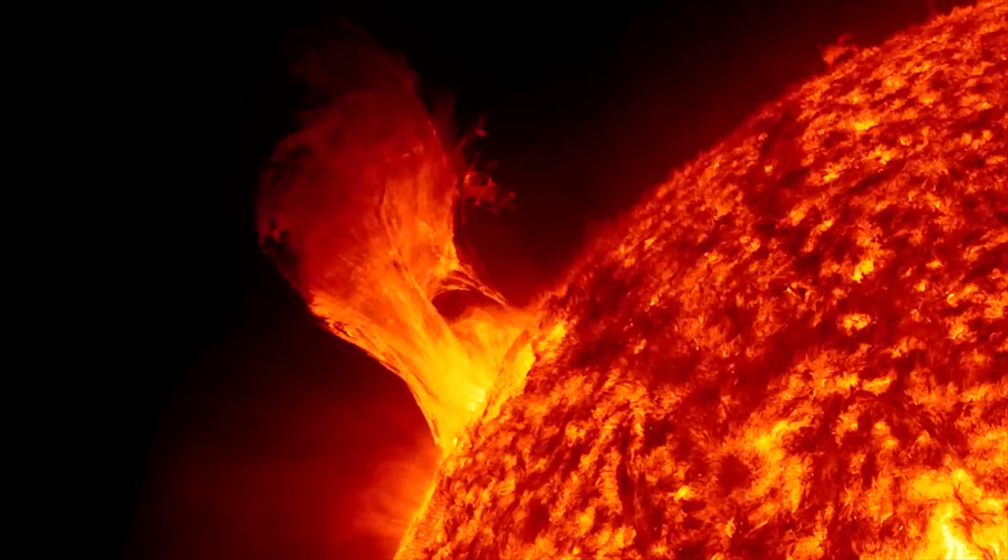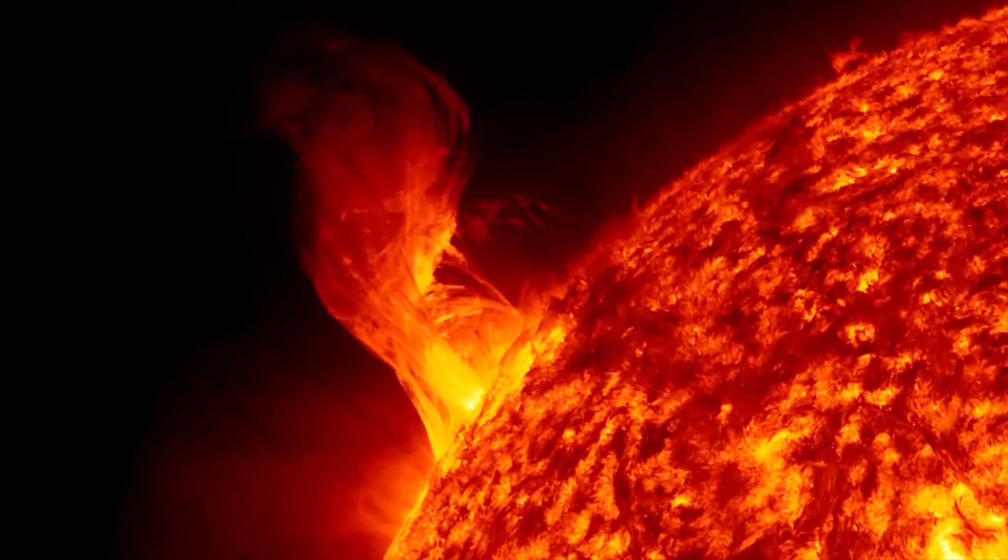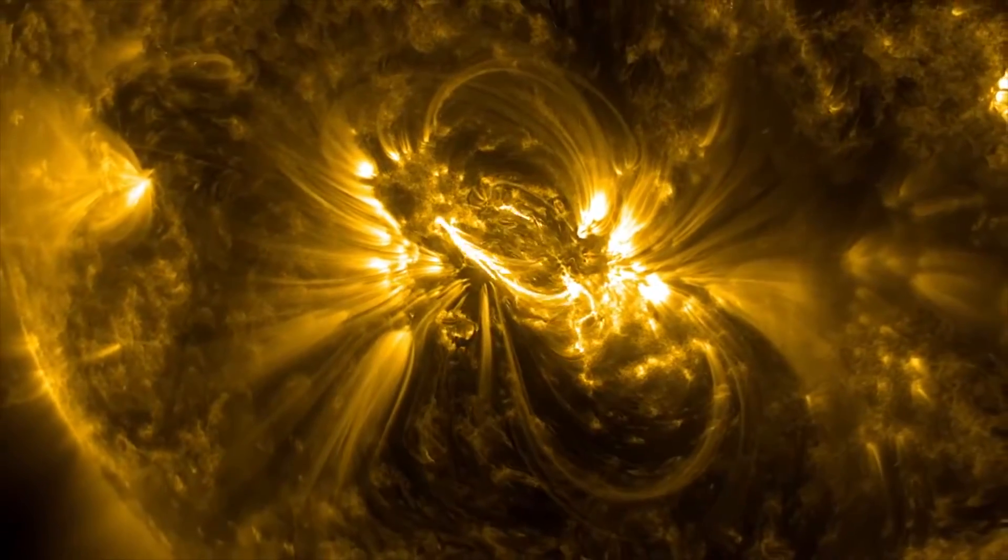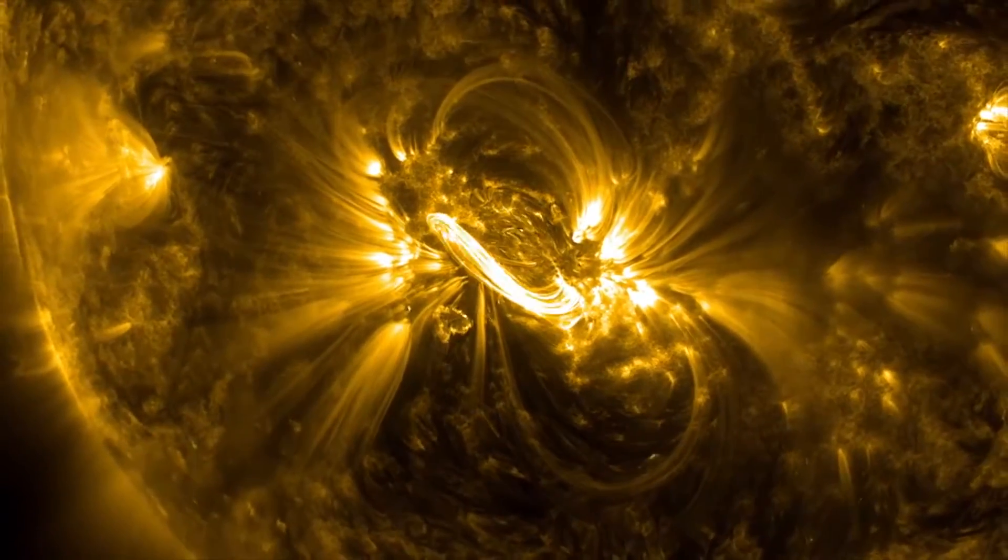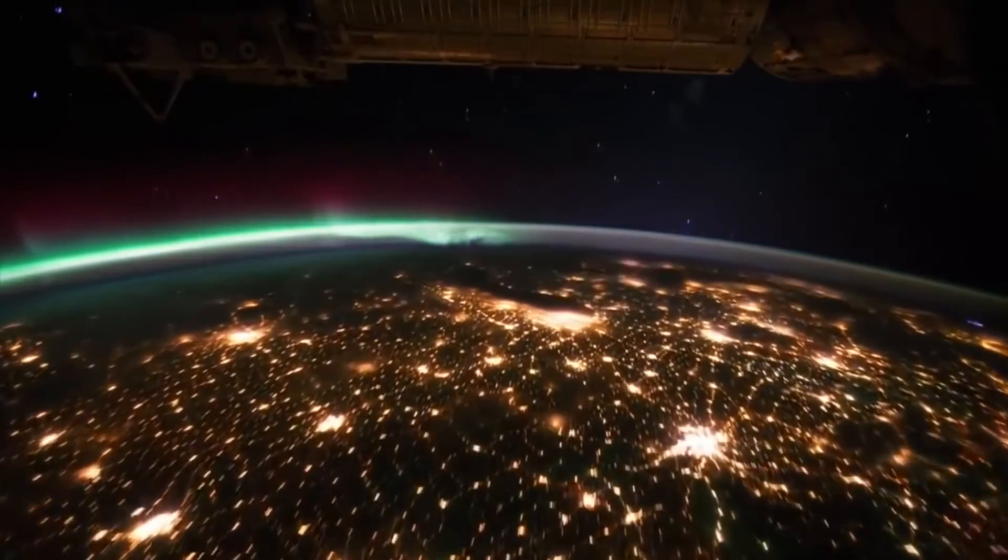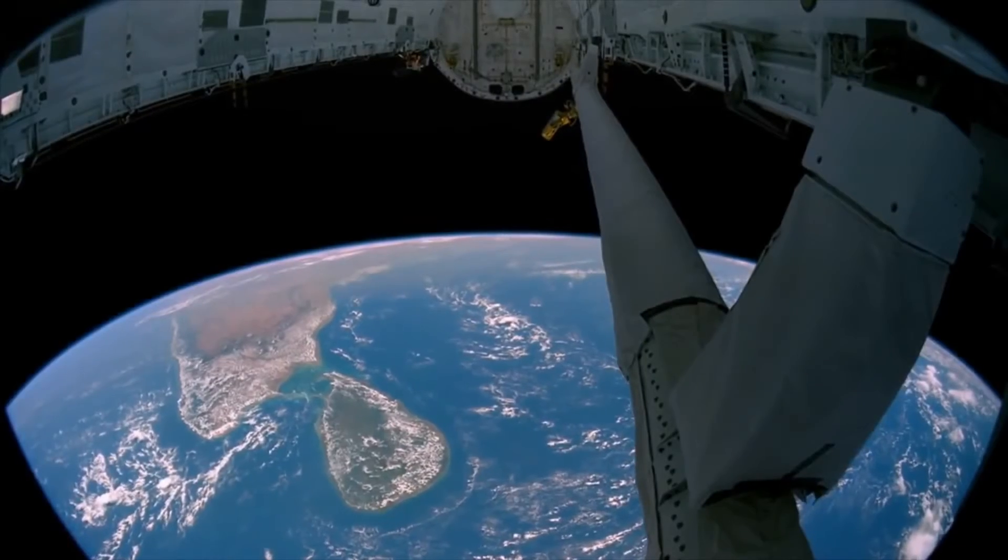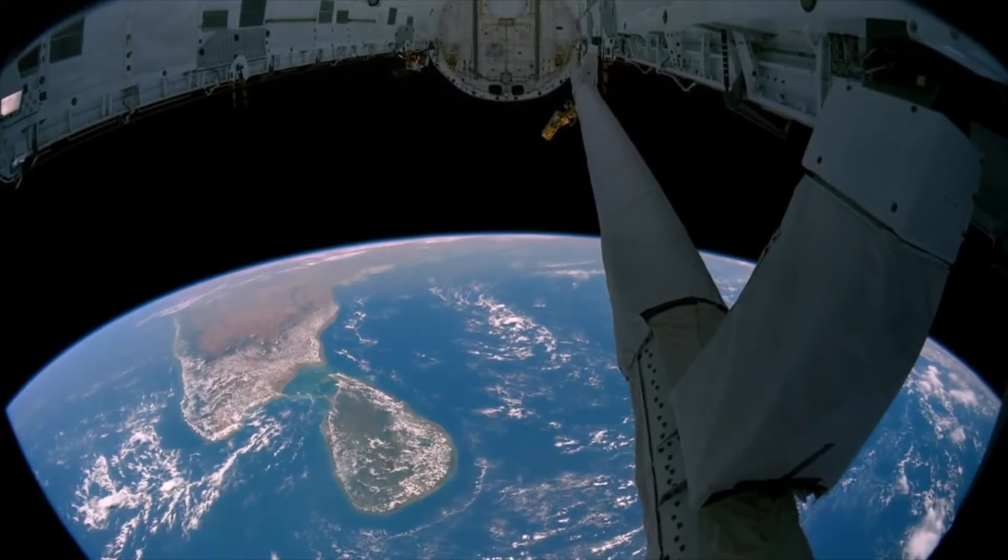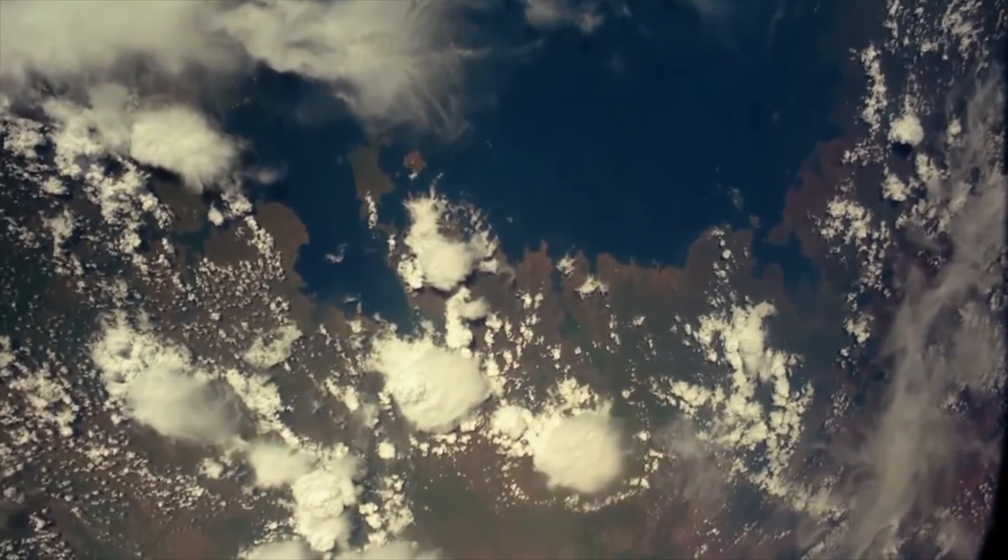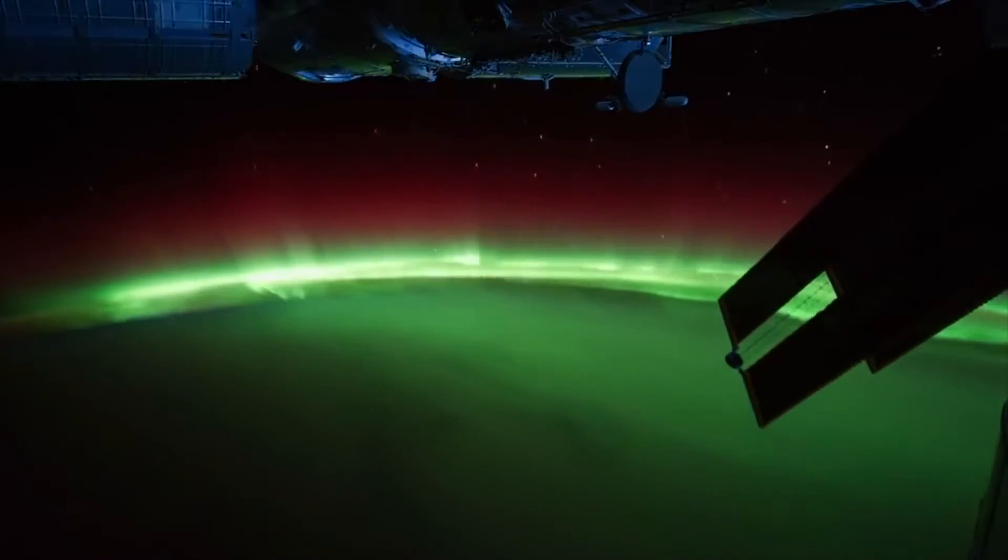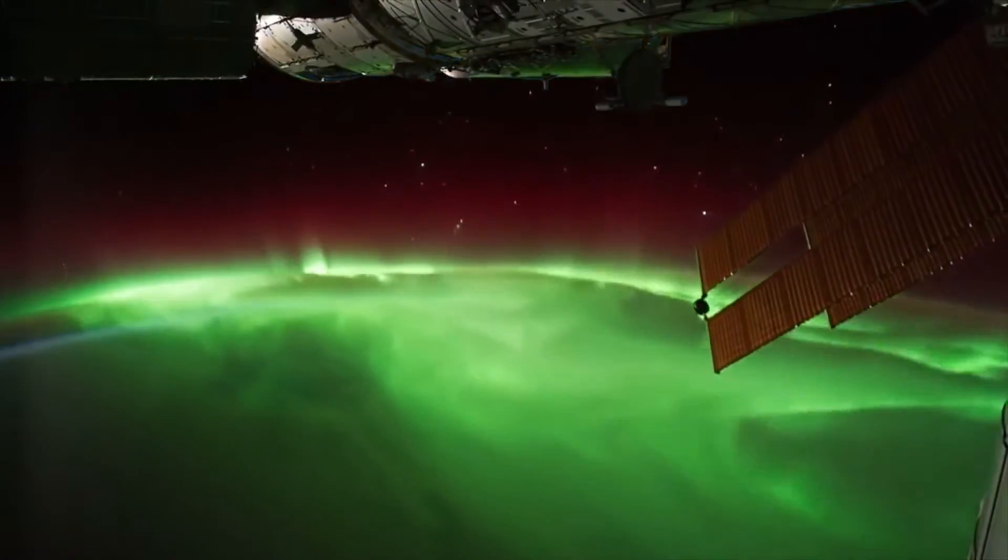Space weather refers to the collection of processes beginning at the Sun and ultimately affecting the technology on Earth and in space, which has a direct impact on our daily lives. In order to protect people and systems that might be at risk from space weather effects, we need to understand the causes of space weather and ideally be able to pre-empt the consequences of space weather events by means of efficient warning and prediction systems.